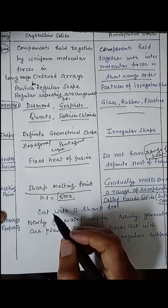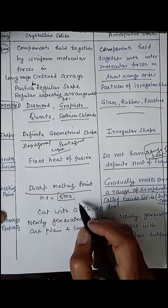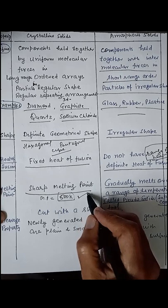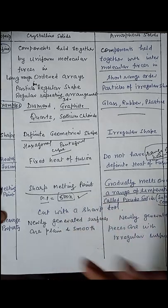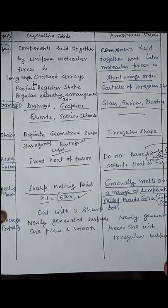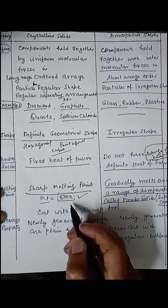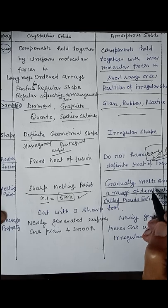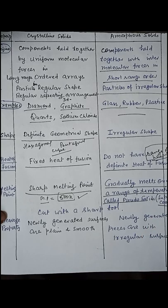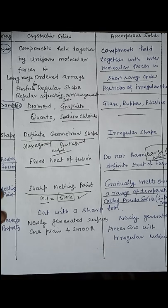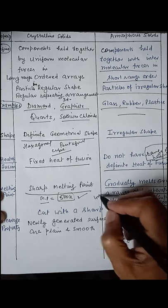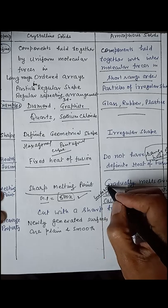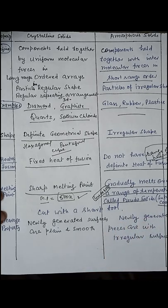The other point of difference is melting point. Crystalline solids have a sharp melting point — for example, if the melting point is 500 Kelvin, then all of the solid melts exactly at 500 Kelvin. In amorphous solids, they gradually melt over a range of temperature — for example, they may melt from 400 to 450 degree Celsius.